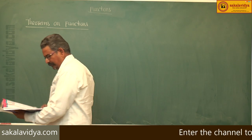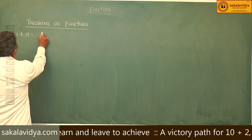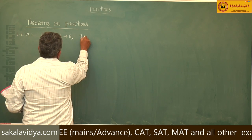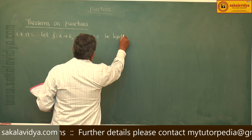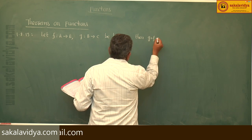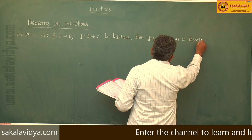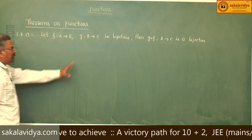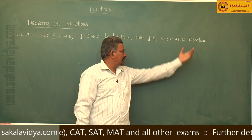Next theorem, 1.2.13. Let f map A to B, g maps B to C, both bijections. Then g∘f maps A to C is a bijection. We know the definition of a bijection: if a function is both an injection as well as a surjection, then it is called a bijection.